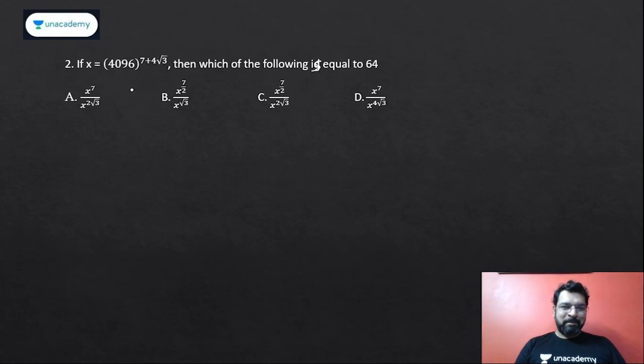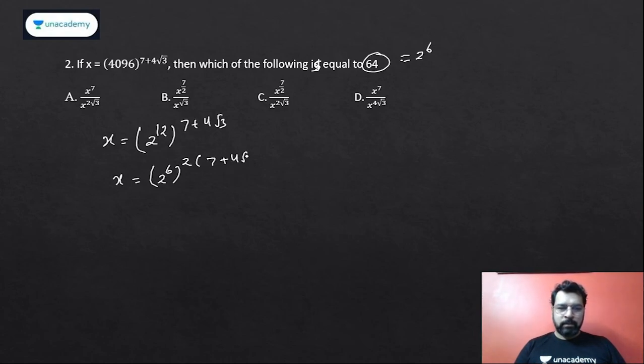So x is given as this. Now, what is 4096? 4096 is 2 raised to the power 12, raised to the power 7 plus 4 root 3. Now I need 64, which is nothing but 2 to the power 6. So I try to do this. I will say it is 2 to the power 6, raised to the power 2 times 7 plus 4 root 3.